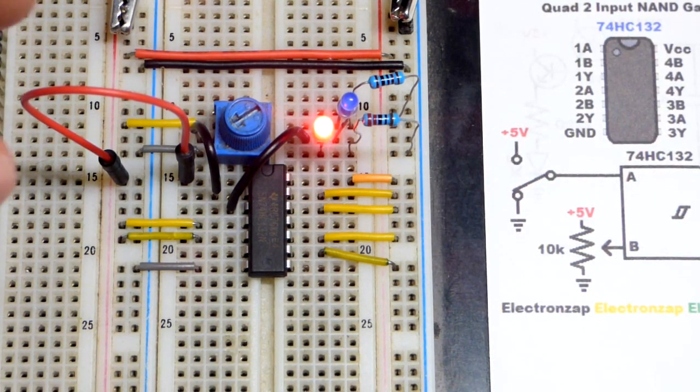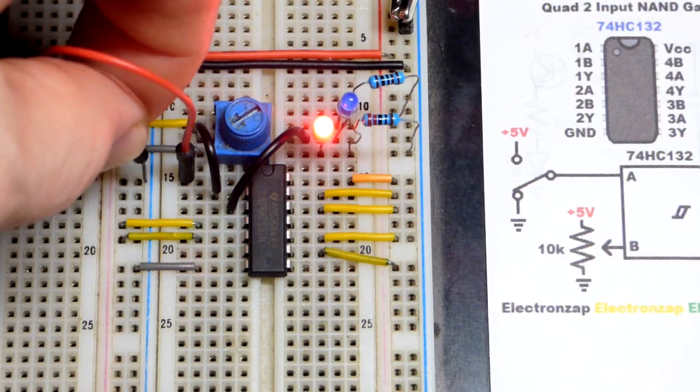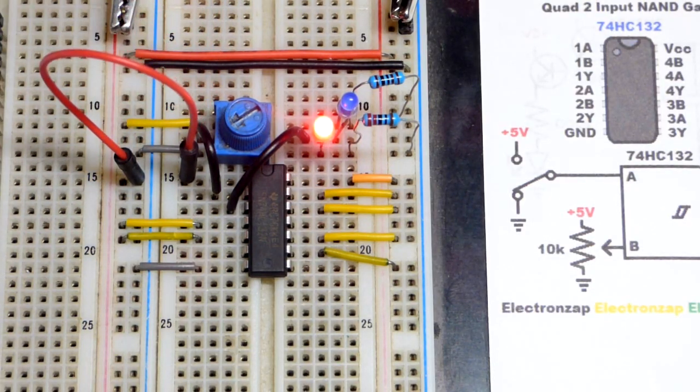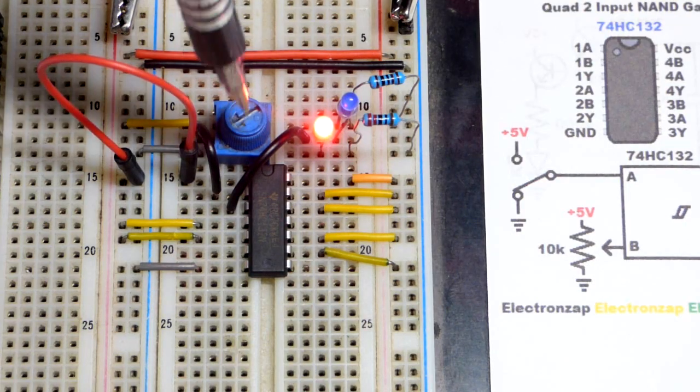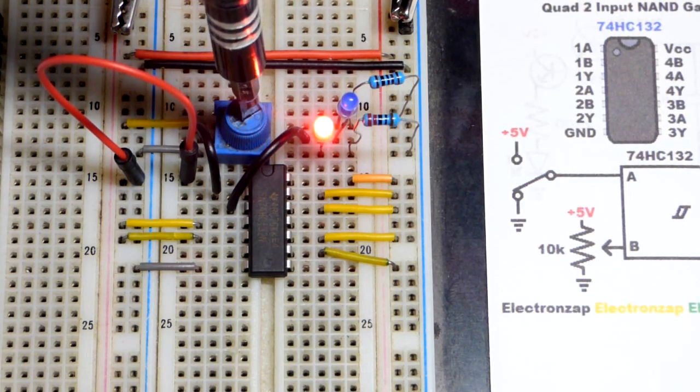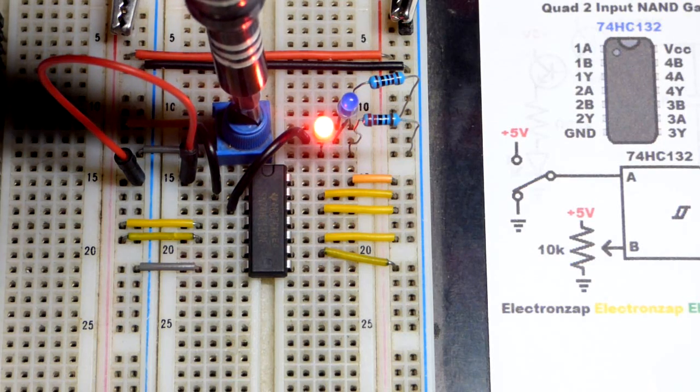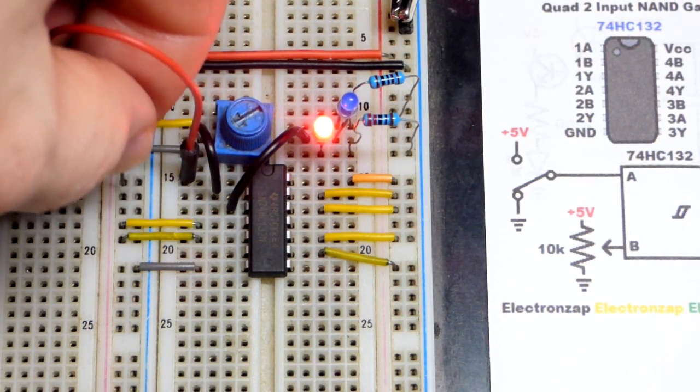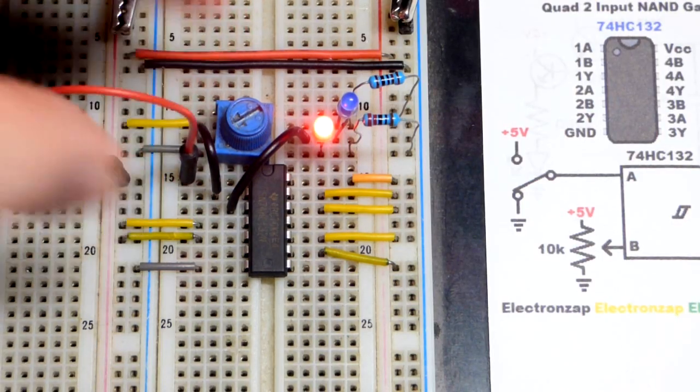Make sure you always have a load at the output if you wire it up. So we're already at the positive supply for that input, input A, the upper one right there. Now we go back to negative. Now I can turn the trim pot, doesn't matter where I set the trim pot, output is going to be high because we have one input that is low. So let's get this jumper back to the positive supply right there.